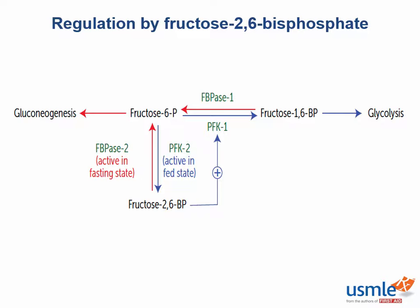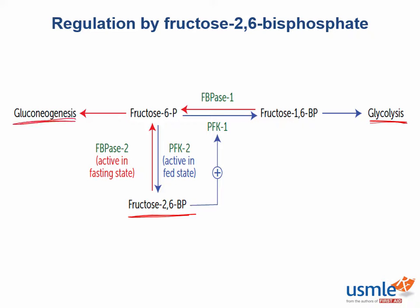Next up, we have regulation by fructose 2,6-bisphosphate. We've already looked at glycolysis as well as gluconeogenesis and in part how it's regulated. It's pretty logical to understand why end products such as ATP can inhibit glycolysis, but the reason why fructose 2,6-bisphosphate can activate some glycolysis enzymes may not be quite so intuitive. It's best to think of fructose 2,6-bisphosphate as a regulation molecule or a side process that can go along with glycolysis or gluconeogenesis.